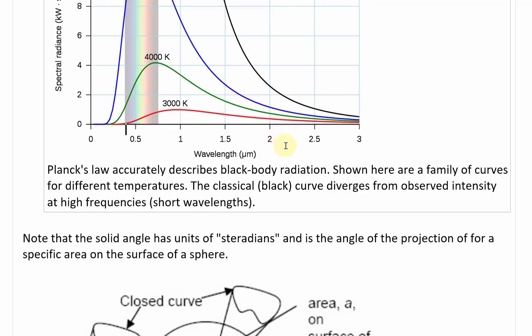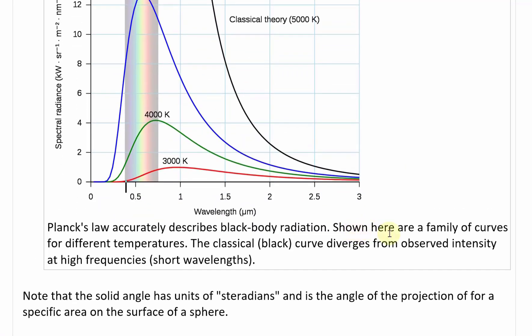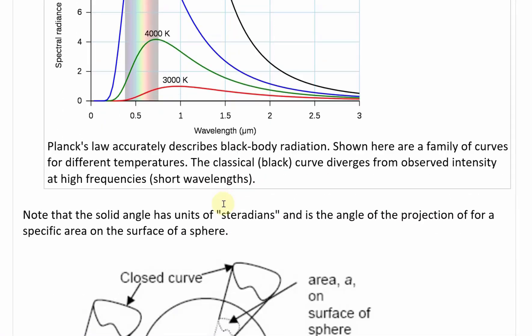Planck's law accurately describes blackbody radiation. Shown here are a family of curves for different temperatures. The classical black curve diverges from observed intensity at high frequencies or short wavelengths, so over here. Going further...